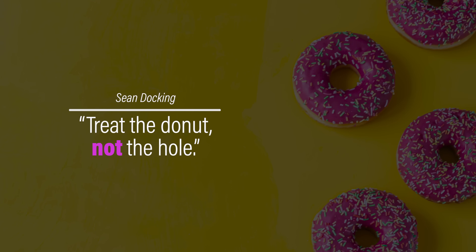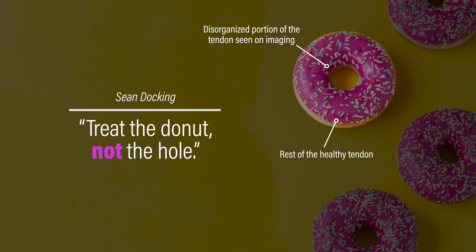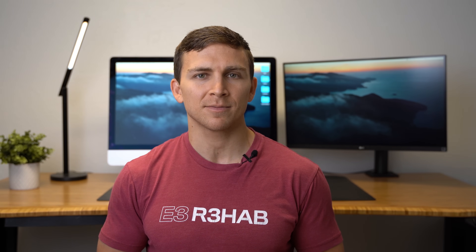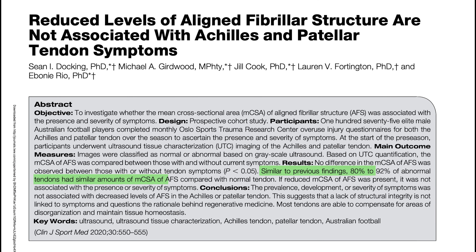One of the most prolific researchers in this area, Sean Docking, coined the phrase 'treat the donut, not the hole.' The hole refers to the disorganized portion of the tendon seen on imaging, while the donut is the rest of the healthy tendon. What your tendon looks like on imaging is likely irrelevant to the rehab process. And if your tendon looks or feels thickened, that's probably a good thing. Research by Docking et al. in 2020 found that abnormal patellar tendons contain similar, if not greater, amounts of organized tendon structure as a compensatory mechanism to maintain tissue homeostasis. Keep the goals of rehab simple: improve tolerance and restore function.